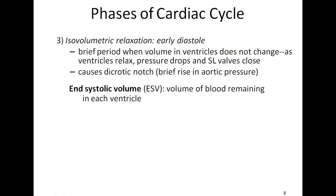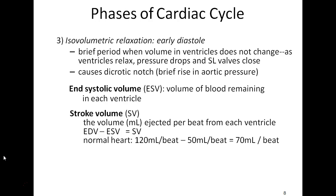We have a new term: end systolic volume (ESV), which is the volume of blood remaining in each ventricle at the end of ventricular systole. At the end of ventricular systole, we get an isovolumetric relaxation stage — a brief period when the volume in the ventricles does not change, pressure drops, and the semilunar valves close. Stroke volume is the volume of blood ejected during ventricular ejection — the amount ejected during one cardiac cycle.